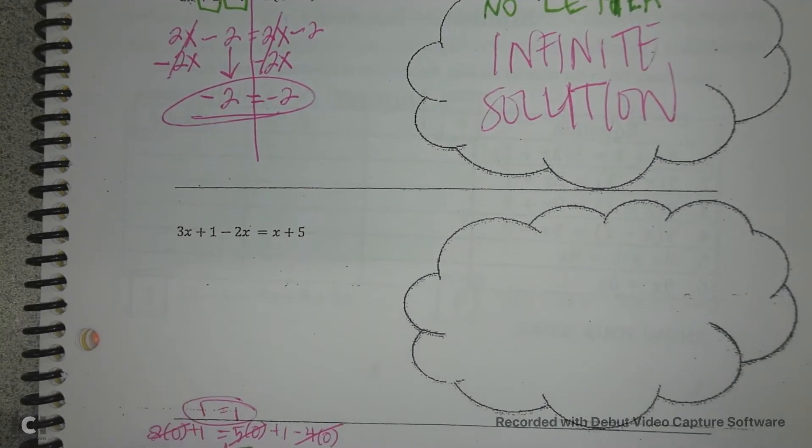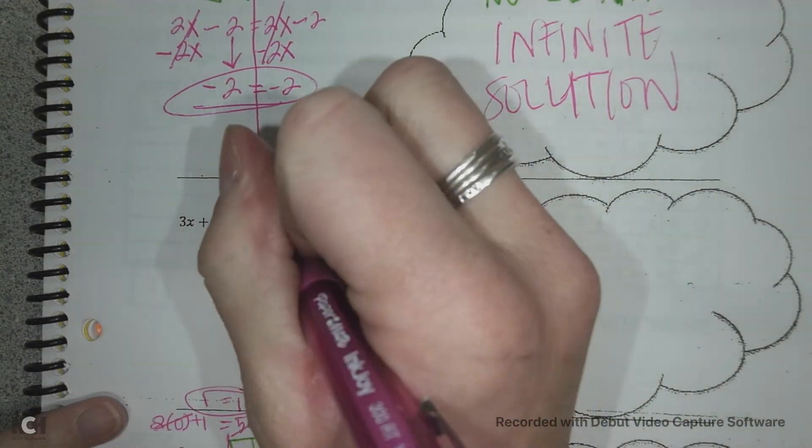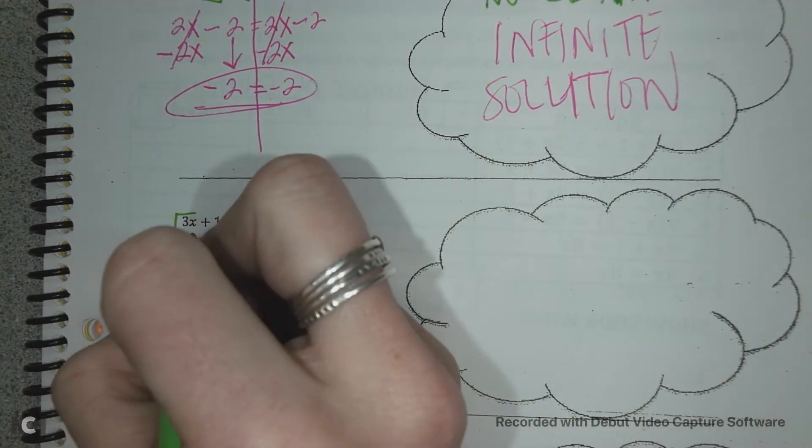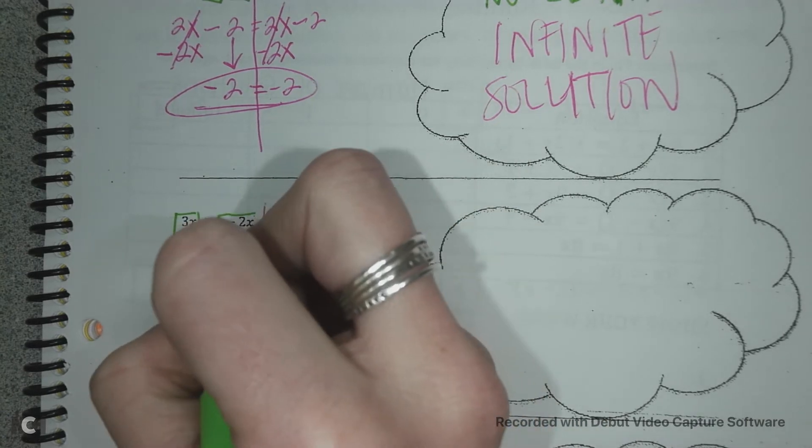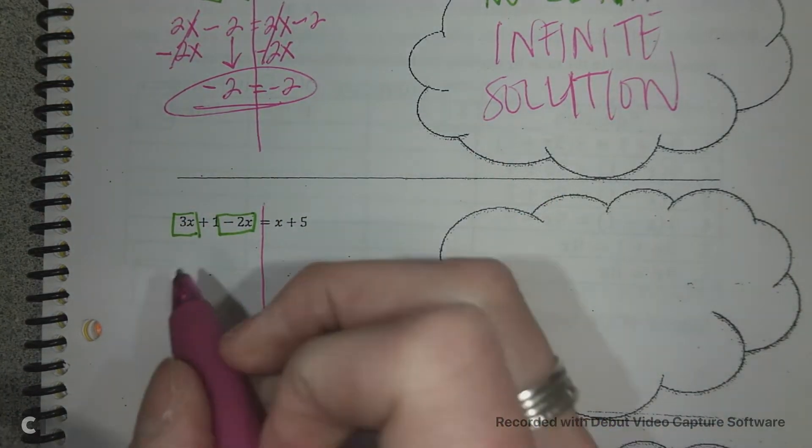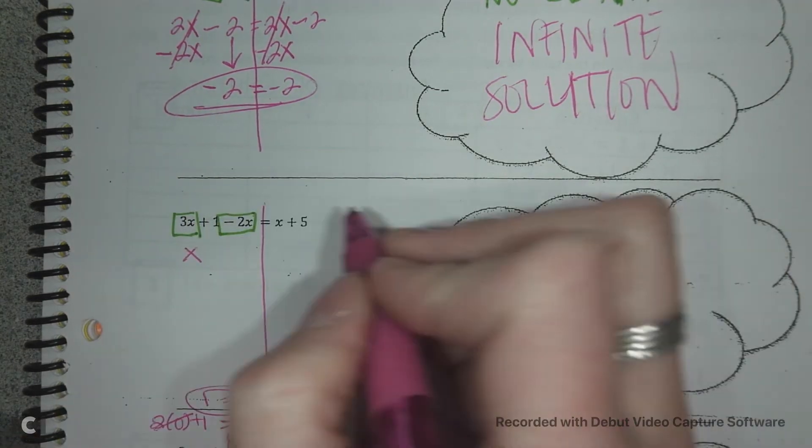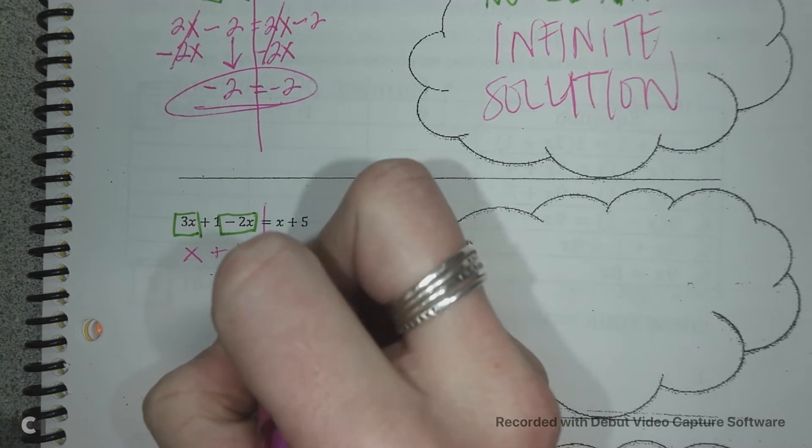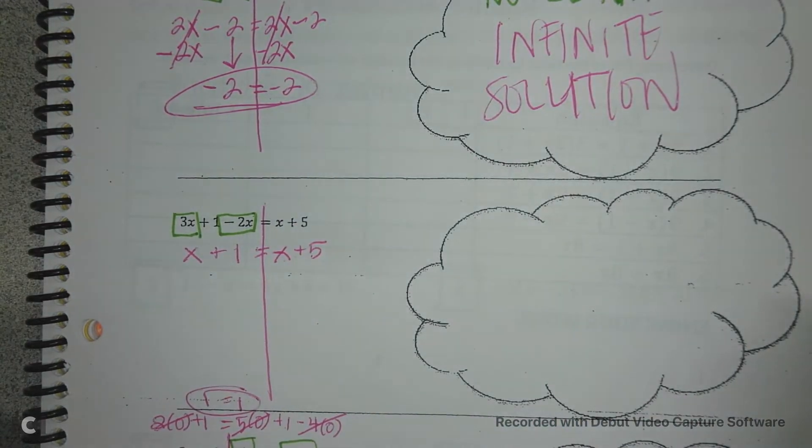Okay. So what that means is that you could pick any number to replace your x value. And as long as you put the same number in the left side and the right side, they will always equal each other. It's kind of cool. Okay. Then let's look at this case. I'm going to draw my line. The left hand side. Oh, I've got some like terms. I love like terms. I got 3x and negative 2x's. If I have 3x and I take 2x's away, I'm left over with 1x. And I still have my 1 equals x plus 5.